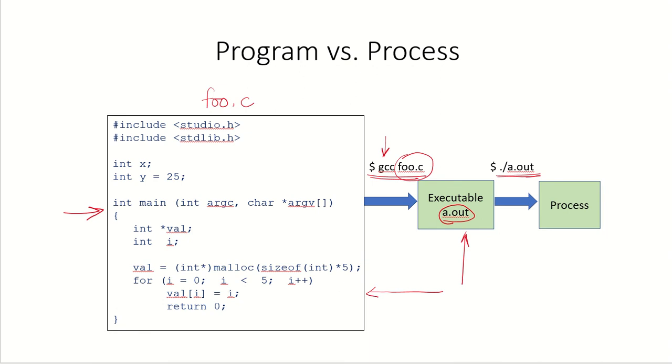As long as it was a high level language program stored on the hard disk or an executable file stored on the secondary storage, this is referred to as a program. Only when it is taken up for execution and at the shell prompt you may type dot slash a.out, this will be converted into a process because this program has now been taken to the RAM for execution.